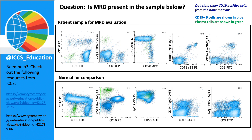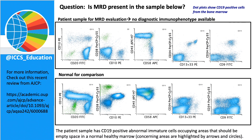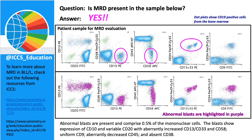Welcome back from your pause. I suspect you have identified something a little funny in this patient sample. We see some areas occupied by cells that are really empty in the normal sample for comparison. Highlighted by purple circles, we have a few positions in the patient sample where the normal sample is relatively empty, which are quite concerning for residual disease. We can draw a gate around these populations and indeed confirm that yes, this is an abnormal blast population and this patient unfortunately does have residual disease present — they are MRD positive.